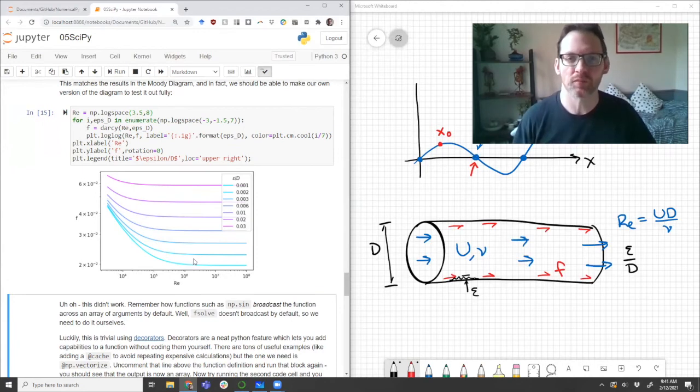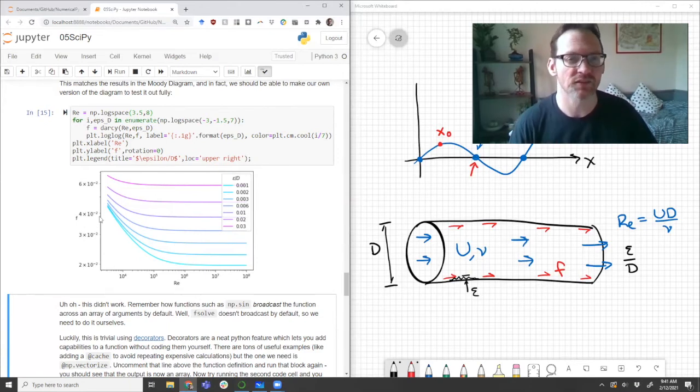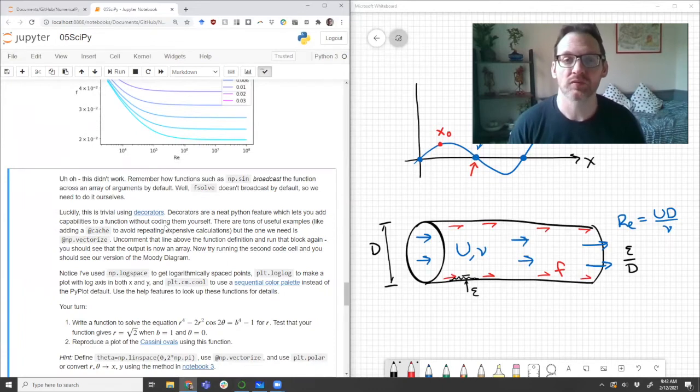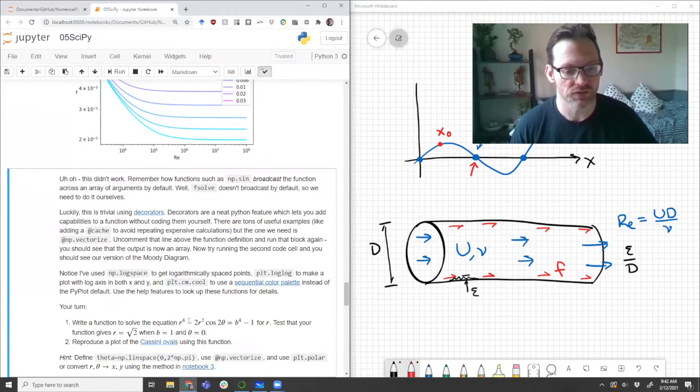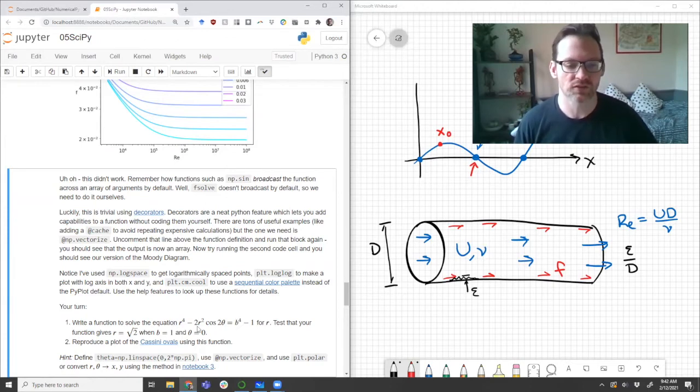So if we compare this to the normal Moody diagram, then we'll see that it does match. Also note, we haven't used the default pie plot color scheme here. Instead, we've used a sequential color scheme, because that tells you that as you increase your roughness, you also increase your friction factor. So that gives the viewer a hint, a visual cue as to what's going on. So now that we've made that Moody diagram, it's your turn. So I want you to write a function to solve this implicit equation. This is actually the equation that defines Cassini ovals. And you should be able to write an implicit equation solver, very similar to the Darcy solver above, that solves this given theta and b for the radius r. And you can test it with this condition I've given you here. And you should also be able to reproduce some of the plots on this one.